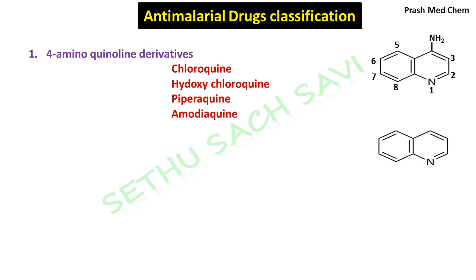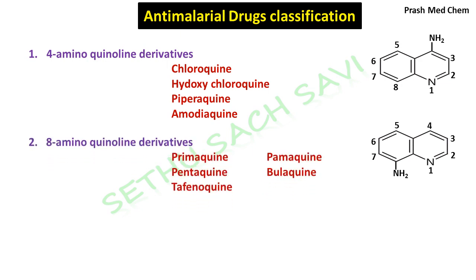Again, this is another quinoline ring and the numbering goes on: 1, 2, 3, 4, 5, 6, 7, 8. This time, if you attach an amino group at the eighth position of quinoline, it would become 8-aminoquinoline. Some derivatives of 8-aminoquinoline were found to have anti-malarial properties, and the drugs belonging to this category include primaquine, pamaquine, pentaquine, bulaquine, and tafenoquine.